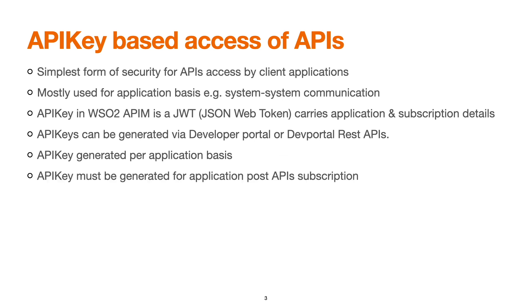The API key must be generated after the application subscribes to the particular API. We must subscribe to the API first, then go for API key generation, because during the generation process it checks what subscriptions exist. If we generate the API key in advance before subscription, it won't work for API access.